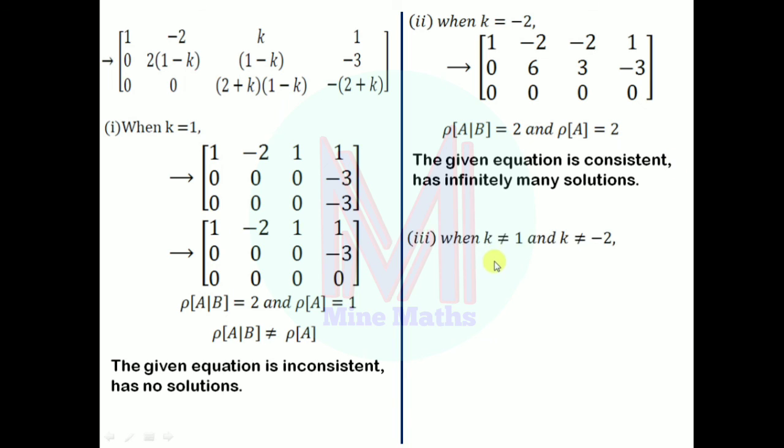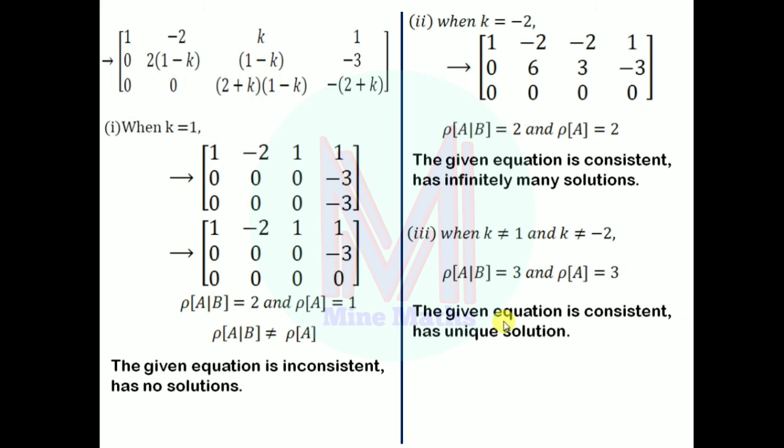Case (iii): When k ≠ 1 and k ≠ -2, all entries remain non-zero and the augmented matrix has rank 3, same as matrix A. The ranks are equal to the number of unknowns, so the system is consistent and has a unique solution.